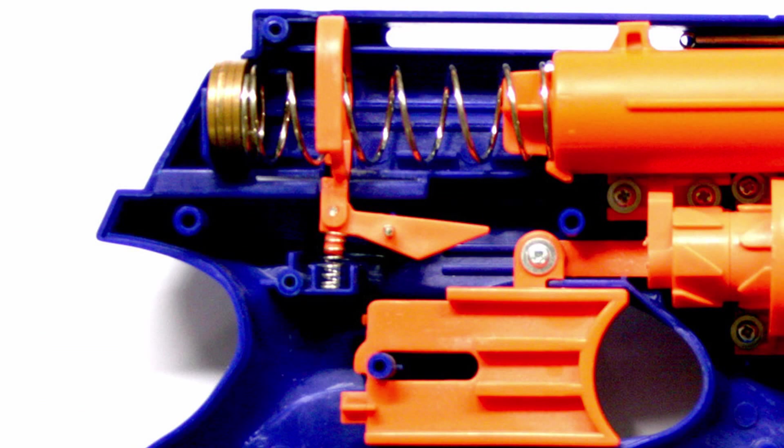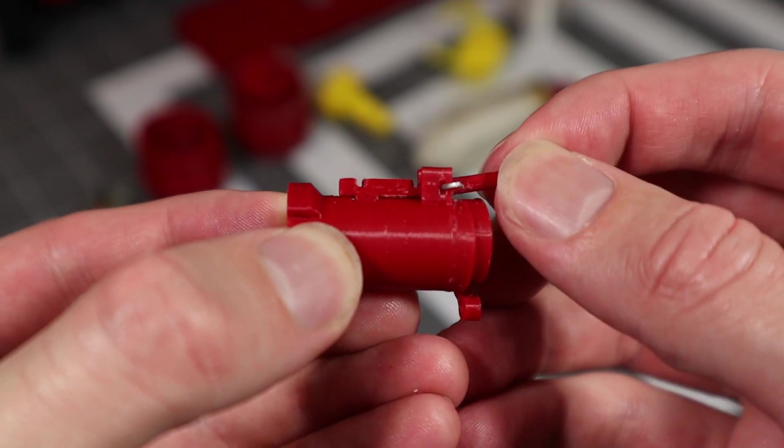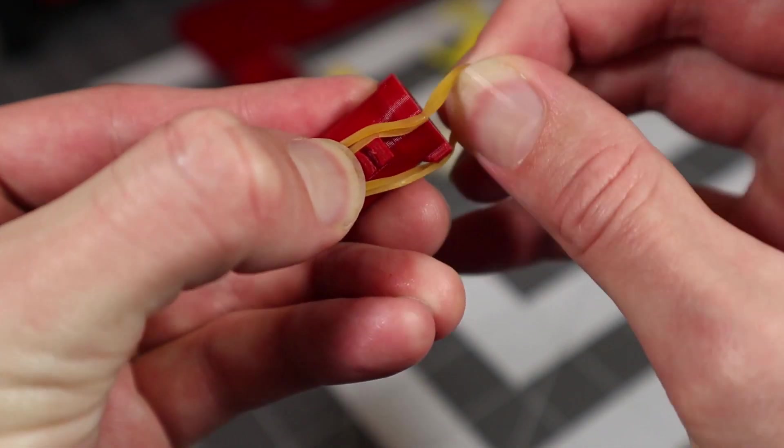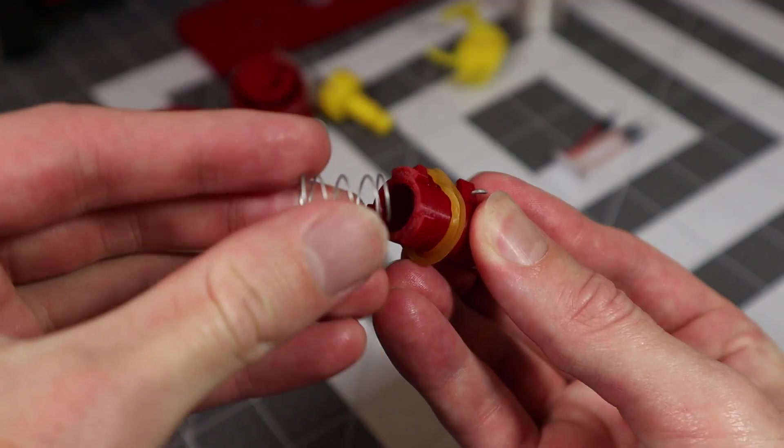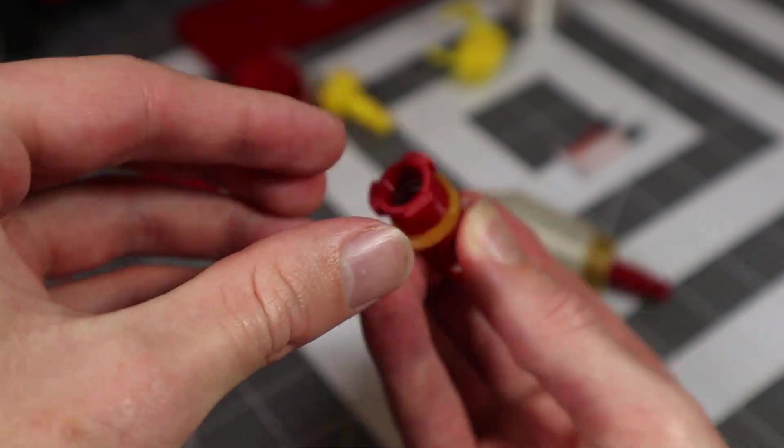Spring loaded latch, you say? Don't mind if I do. But instead of a spring, let's use a rubber band, since it takes up less space and is easier to mount. Now all I have to do is drop a spring in there, and the vacuum tube will shoot out.